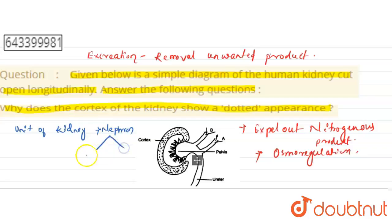And nephron has two parts. One is the renal corpuscle. Another is the renal tubule. So this dotted part is basically due to the presence of the renal corpuscle. I hope I explained it well. Thank you.